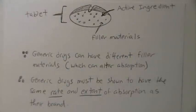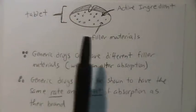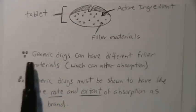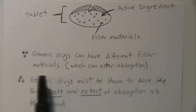Generic drugs are allowed to have different filler materials holding in the active ingredient. That's why generic drugs come in different shapes, colors, and sizes compared to their brand name drugs.